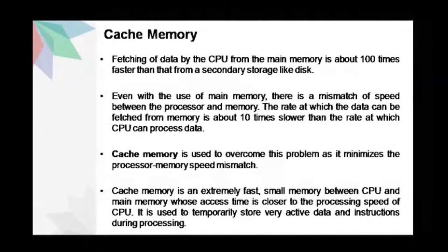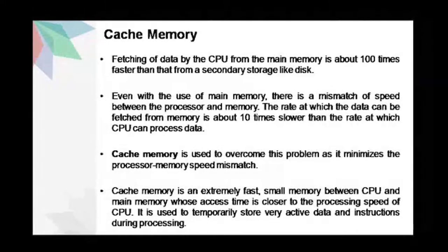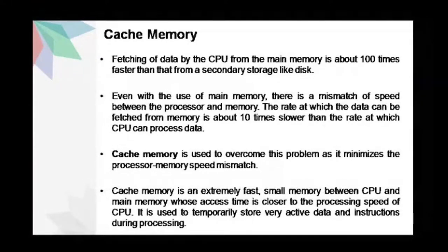Cache memory is an extremely fast, small memory between the CPU and the main memory, whose access time is closer to the processing speed of the CPU. It is used to temporarily store very active data and instructions during processing. It is made up of static RAM and acts as a high-speed buffer between the CPU and the main memory.